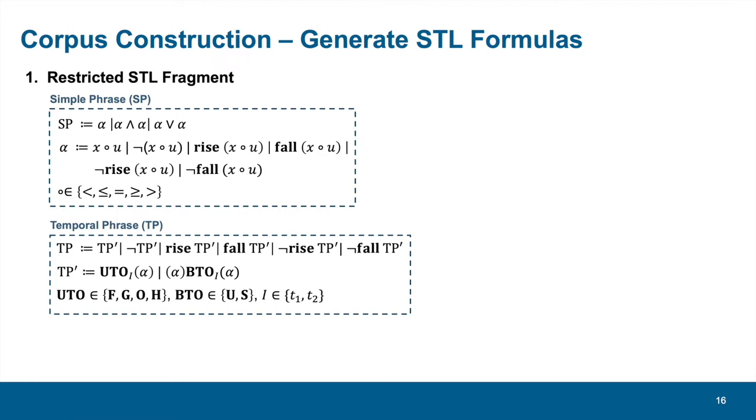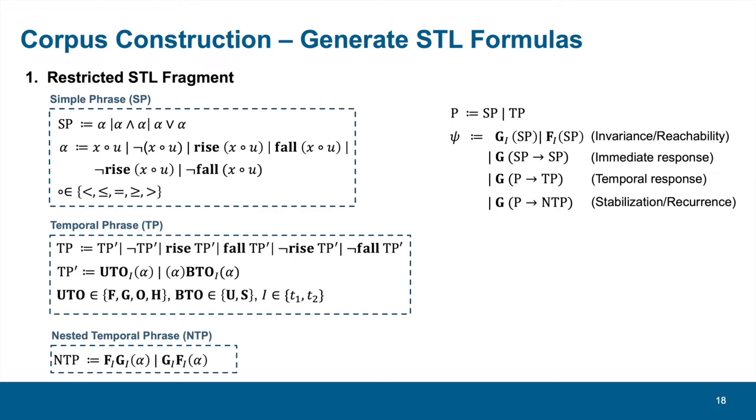Then moving up, we reach the layer of nested temporal phases with a combination of F and G operators. Finally, with an auxiliary component P, we can assemble the three defined layers to obtain the four template categories identified in empirical analysis. Through assigning different probabilities to selecting different syntactic components, we can sample an STL formula with a weighted manner. Here is an example to show how a formula is generated. Clearly, this formula belongs to the temporal response template.